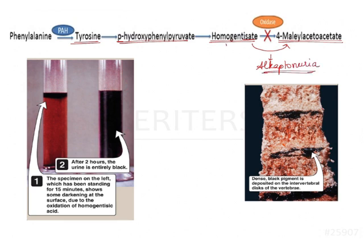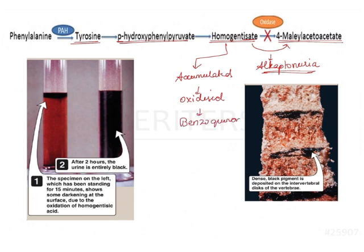So the deficient enzyme is homogentisate oxidase. Since the enzyme is not present, homogentisate cannot be further metabolized; rather it gets accumulated in the body. This homogentisic acid gets oxidized to benzoquinone acetate, and this benzoquinone acetate polymerizes forming alkapton bodies.